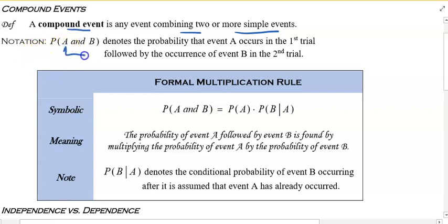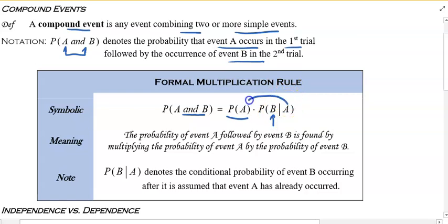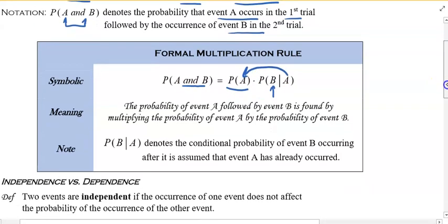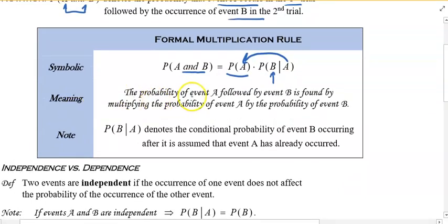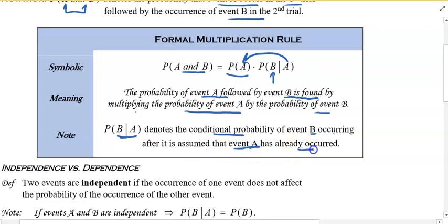Notation: if I say find the probability of A and B, this denotes the probability that event A occurs first, followed by B. So the order here is very important. Symbolically, probability of A and B would be the probability of A times the probability of B given that A has already occurred first. If I write B given A, that denotes the conditional probability of event B occurring after the assumption is that event A has already occurred.